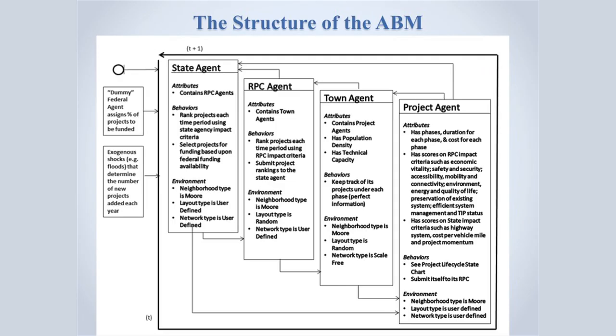The agent-based model has, at this point, a dummy federal agent, where essentially it captures the dynamics of the state agent, regional planning commission agents, and town agents. Projects are also modeled as agents and they have a very complex interlocking set of behaviors that drive the internal endogenous dynamics of the model. But essentially it captures the existing institutional rule structure being implemented by the state of Vermont.